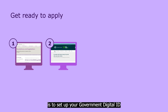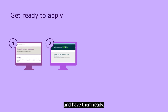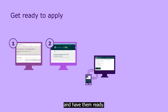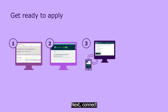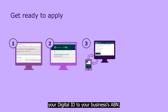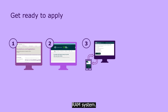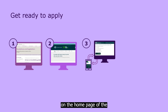Second step is to set up your government digital ID, or get the details of your digital ID and have them ready. Next, connect your digital ID to your business's ABN. You can do that through the government's RAM system. There's a link to the RAM system on the homepage of the EMDG online portal.